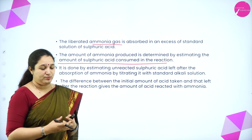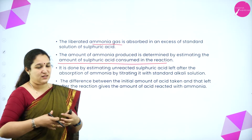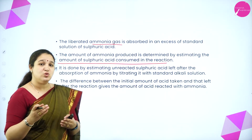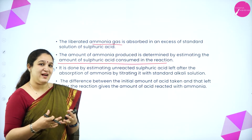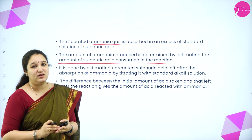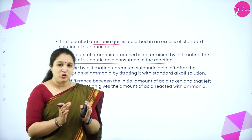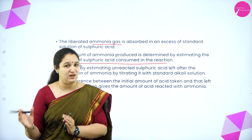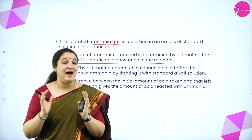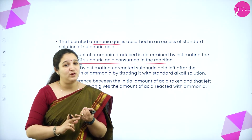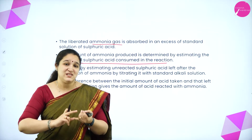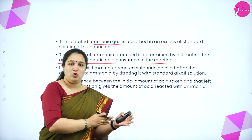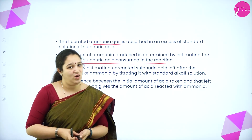The ammonia gas formed is absorbed by the standard sulfuric acid or HCl. The amount of ammonia produced is determined by estimating how much sulfuric acid is consumed. Once all the ammonia has reacted with the sulfuric acid, we titrate the remaining acid against a standard alkali. The unreacted sulfuric acid reacts with the alkali, and from this data we calculate how much sulfuric acid reacted with ammonia — which equals the amount of ammonia produced, which tells us the nitrogen content.